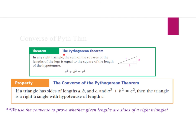The original Pythagorean Theorem says: in any right triangle, the sum of the squares of the lengths of the legs is equal to the square of the hypotenuse, giving us A squared plus B squared equals C squared. The converse says: if a triangle has side lengths A, B, and C, and A squared plus B squared equals C squared, then we know we have a right triangle. So this is how we can use side lengths to prove that we have a right triangle by using the converse, even when we don't already know it's a right triangle.